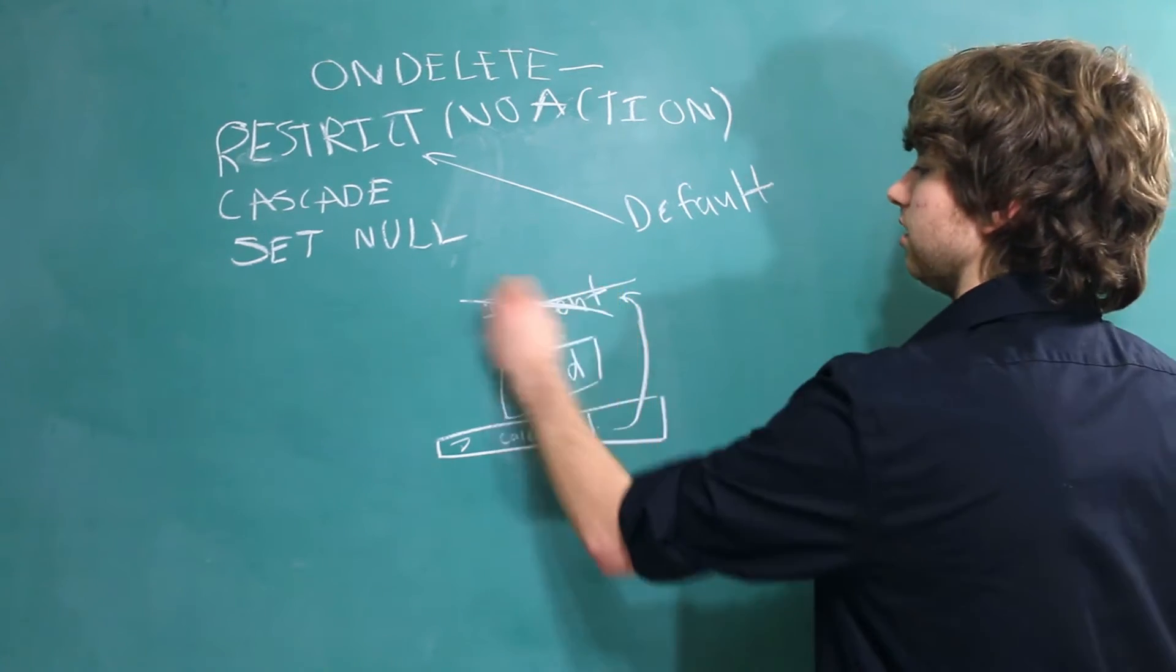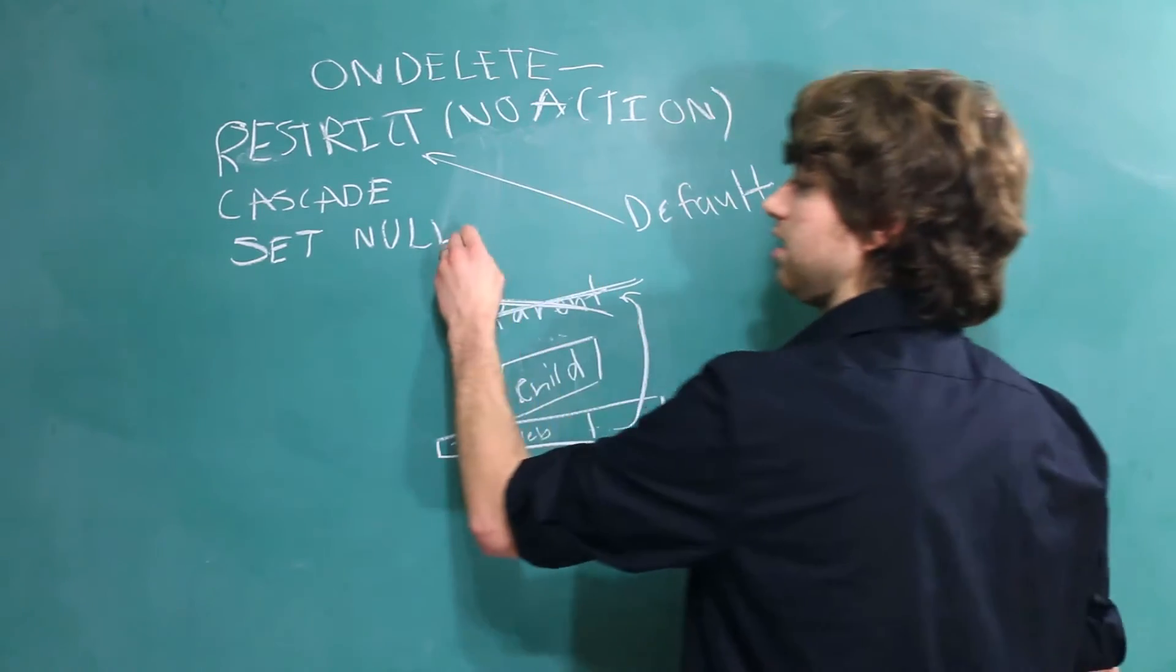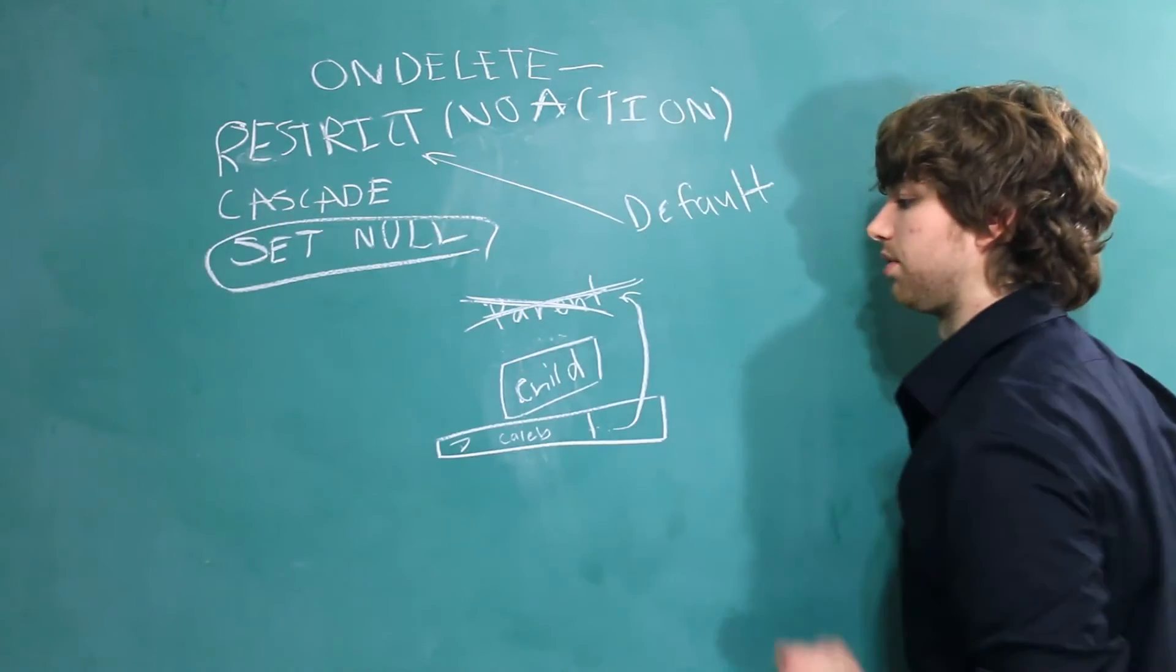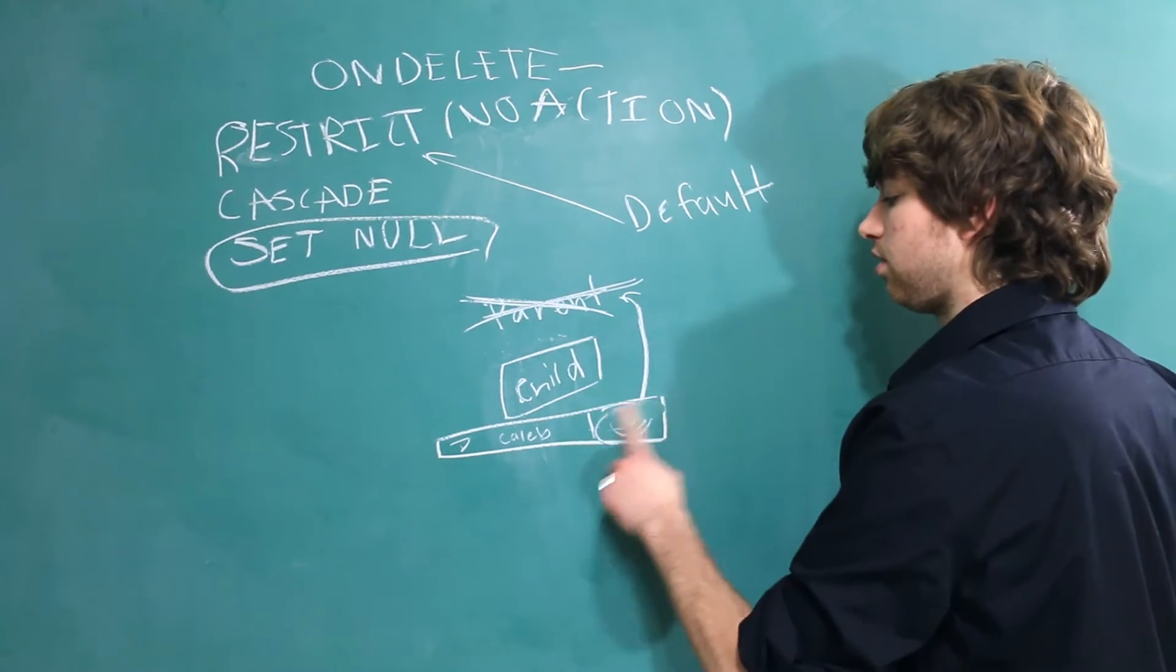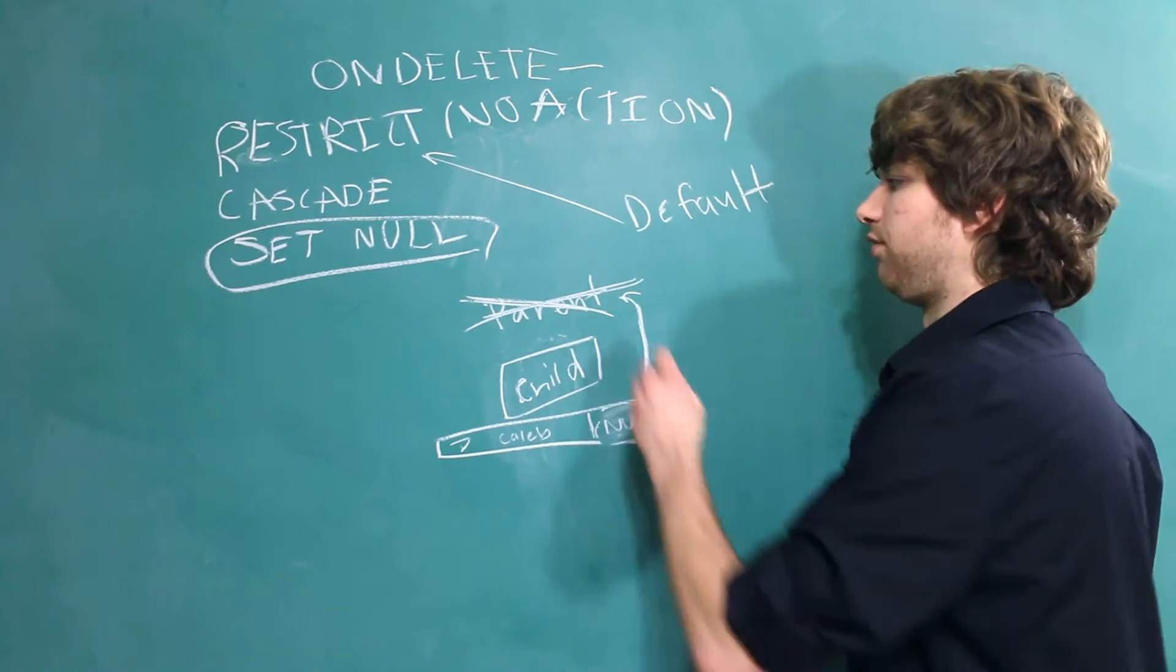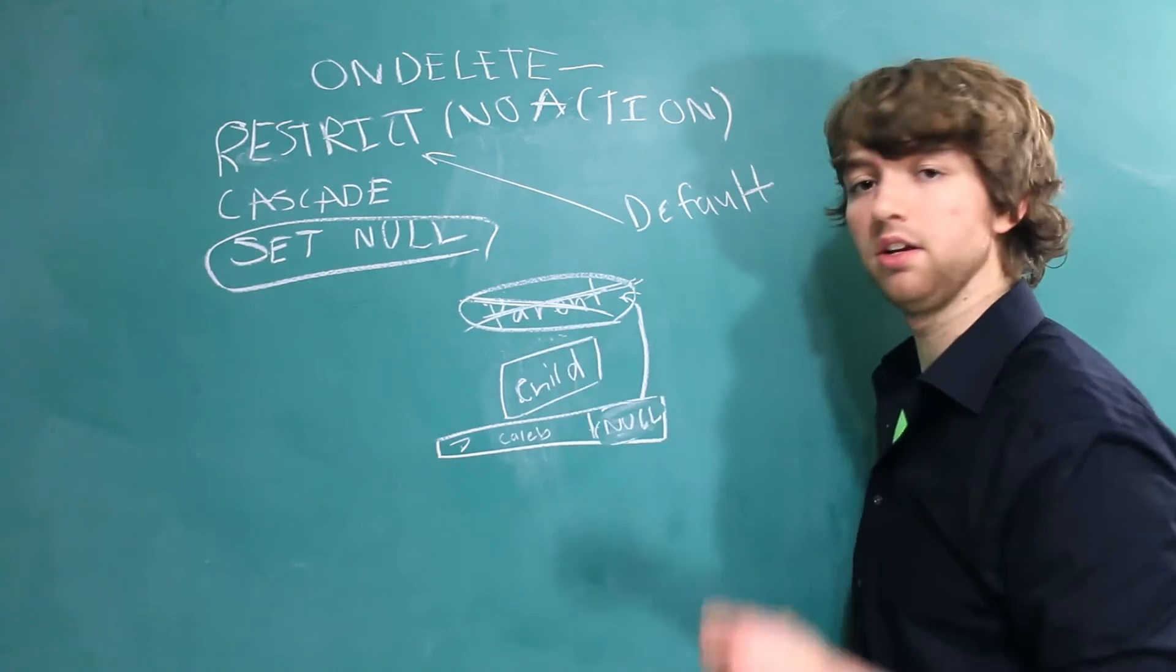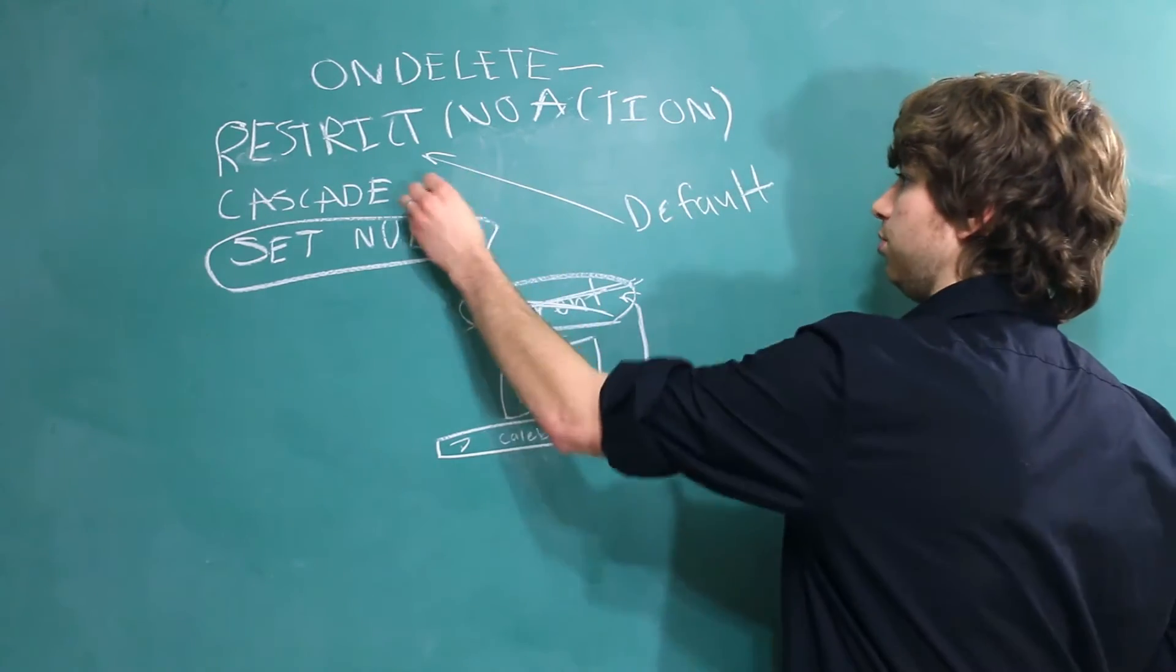And if we, for some reason, delete this parent, when onDelete is set to SetNull, what that'll do is replace whatever value that's here, referencing the parent, to null. That might be useful if you want to be able to delete the parent, but you don't want to also delete the child.